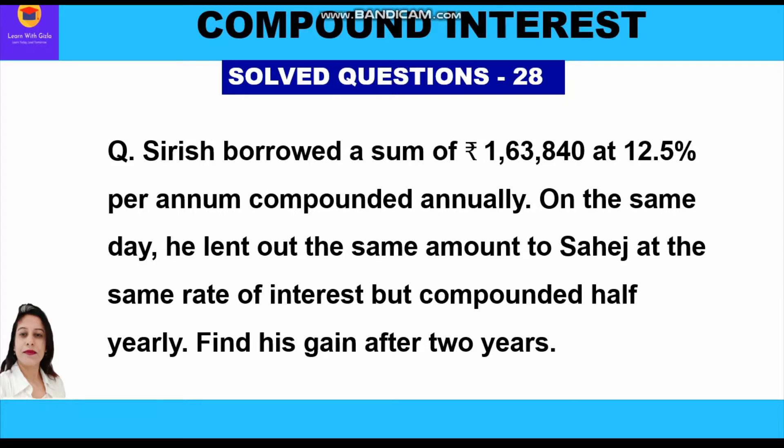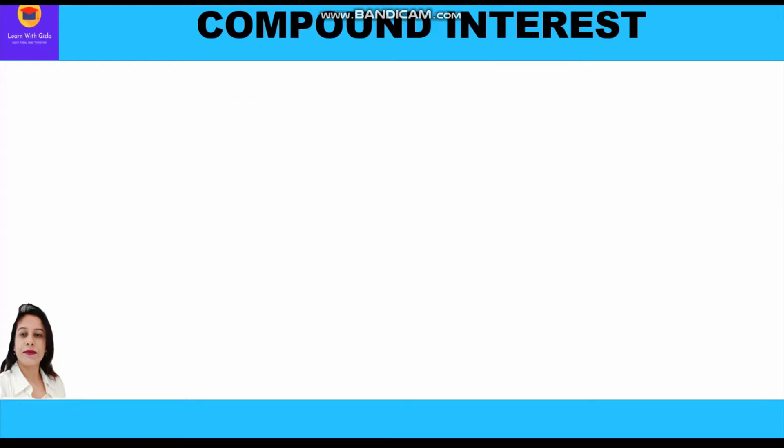We know that more the number of times interest is compounded, more will be the amount of interest. So naturally half-yearly interest will be more than annual interest — just as in the previous video, quarterly interest was more than half-yearly interest. Now let's start with the question.